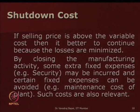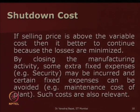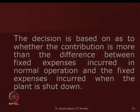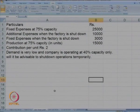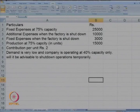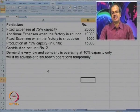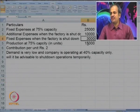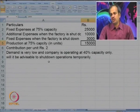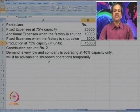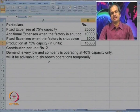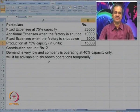Now let us see what is the formula and try one or two problems. The fixed cost at 75 percent capacity is rupees 25,000. Additional fixed expenses if the factory shuts is 10,000, and fixed expenses when the factory is shut down is 3,000. Production at 75 percent capacity is 15,000 units and contribution per unit is 2 rupees. Now demand is very low and the company is able to operate at only 40 percent of capacity. Is it advisable to shut down temporarily?